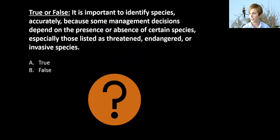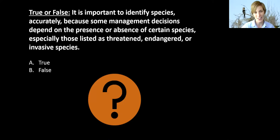Poll question: true or false — it is important to identify species accurately because some management decisions depend on the presence or absence of certain species, especially those listed as threatened, endangered, or invasive. The answer is true — starting off with a little bit of an easy one. We'll dive into some species that are listed as threatened as well as invasive species, so you can get a better idea of how they might be confused and why it's important to tell them apart.